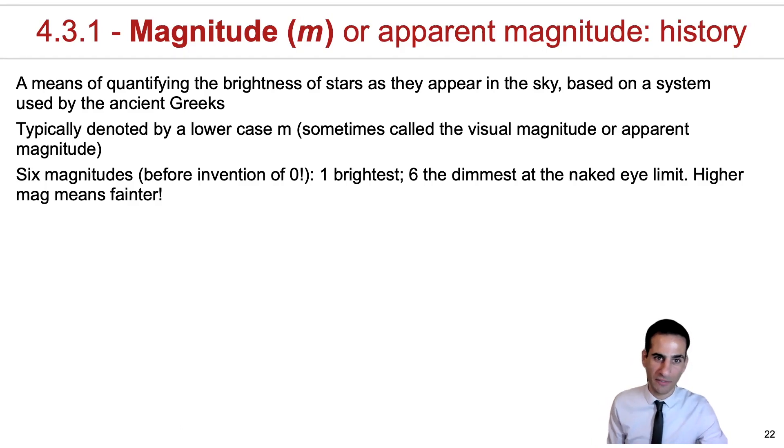Because this was before the invention of zero, the brightest star would be classed as a one. So the brightest star in the sky has a magnitude of one. And then they would rank stars in the equivalent to a logarithmic system, according to our own eyes, where a star with a magnitude of six would be the dimmest at the naked eye limit.